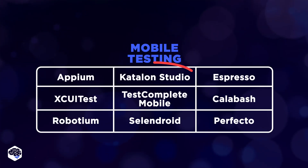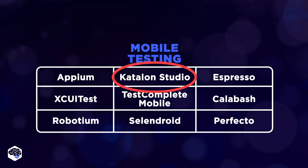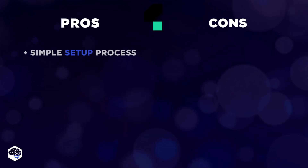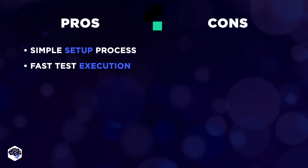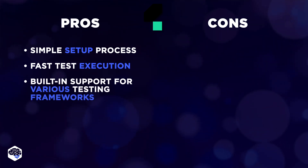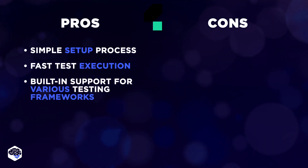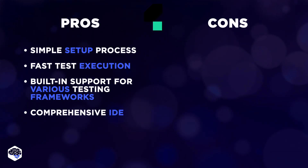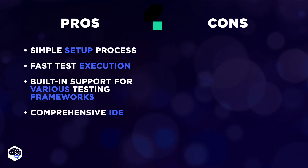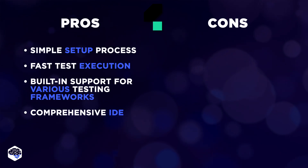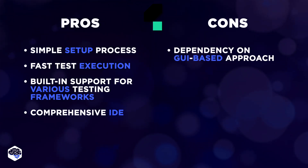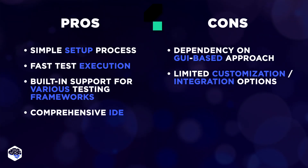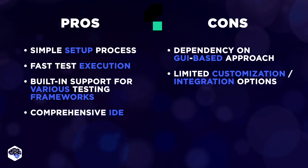For those who find that downside to be a game-changer, there's an alternative. Katalon Studio generally offers a simpler setup process for real devices compared to Appium, and it can be faster in terms of test execution due to its streamlined integration and built-in support for various testing frameworks and devices. Katalon Studio provides a comprehensive IDE with a user-friendly interface, making it easier for testers to create and manage automated tests without extensive programming knowledge. However, its dependency on a GUI-based approach may limit customization capabilities and integration with certain complex testing scenarios.